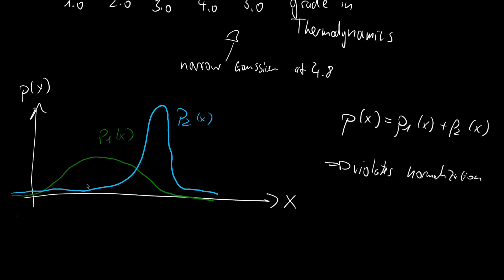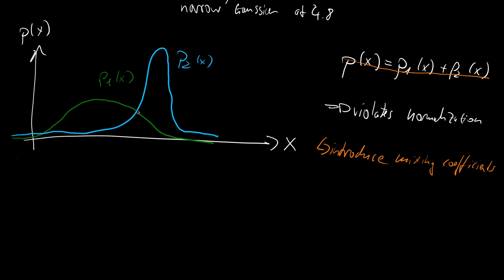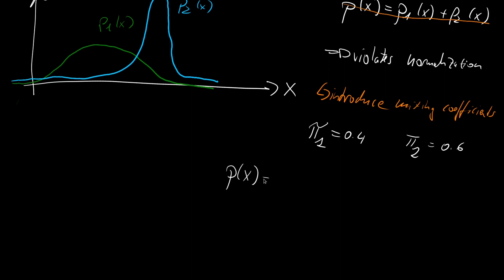So we have to introduce mixing coefficients. For our full distribution, we mix 0.4 times the first distribution and 0.6 times the second distribution. We call them pi: pi_1 = 0.4 and pi_2 = 0.6. Then p(x) = pi_1 * p1(x) + pi_2 * p2(x), and we have a valid probability density function. If you have watched videos on mixture distributions, this is nothing else than the marginal of a mixture distribution.